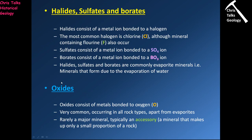Oxides are pretty much everywhere — a very common accessory mineral — and the only place they really won't occur is in evaporites. If oxides occur in significant concentrations, that's when you have something you can actually mine and extract metal from. Iron ore, the material we get iron from, is a range of oxide minerals: you dig it out of the ground, throw it in a smelter, and extract the iron.